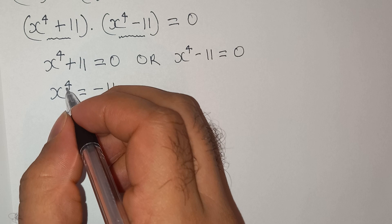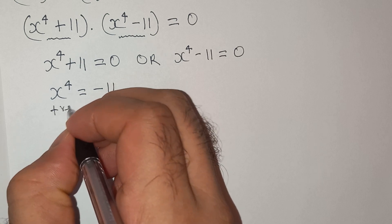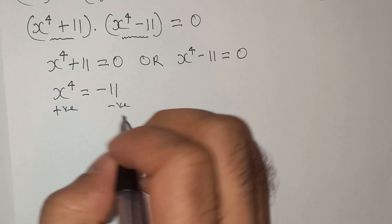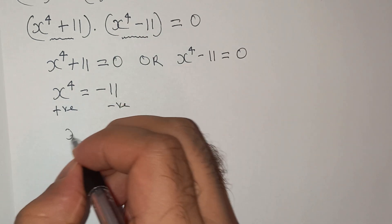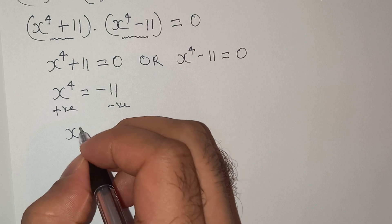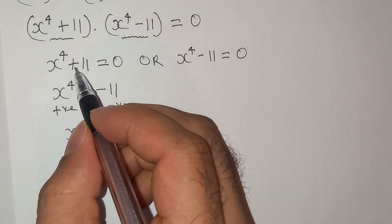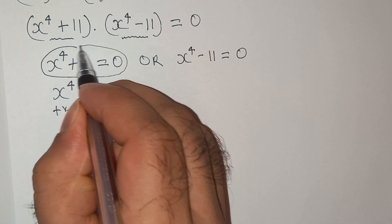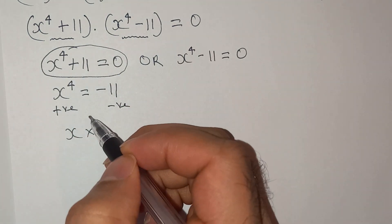Now this x power 4 is a positive number, but here minus 11 is a negative number, so there is no real solution for x. We can reject this equation since there is no real solution, only imaginary number.